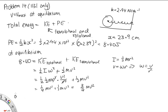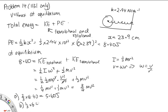For part A — translational kinetic energy — it's two thirds of the total energy: two thirds times 8.40 equals 5.60 joules. For part B — rotational kinetic energy — it's one third of the total energy: one third times 8.40 equals 2.80 joules.